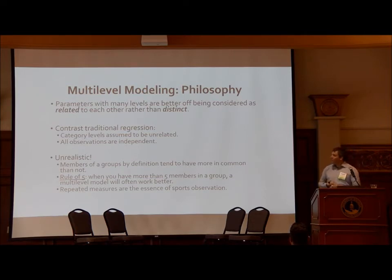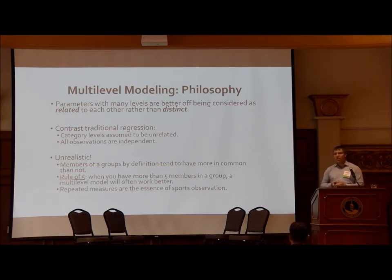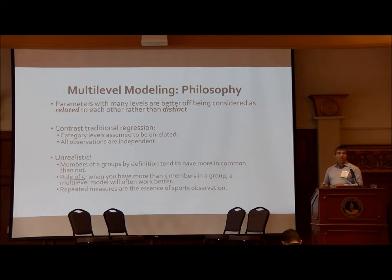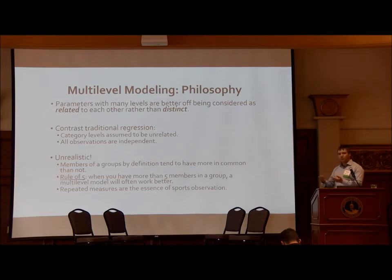The philosophy behind it is that parameters with many levels are better off being considered as related to each other than distinct. Behind the scenes when you're running your linear regression in R, what the programs are doing is one-hot coding — taking each level of those variables and creating a separate variable for each one. The problem is that you're making assumptions that these category levels are not related to each other and that observations are independent. This is entirely unrealistic in sports, because the whole point of being a member of a group is that you are not independent. Repeated measures are the essence of sports observation — people keep coming to the plate, making plays, throwing pitches.